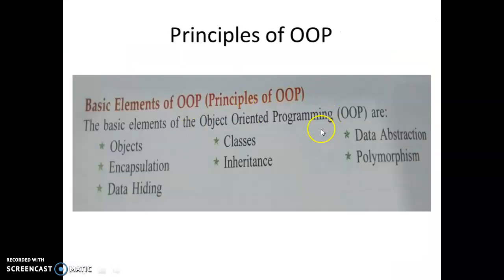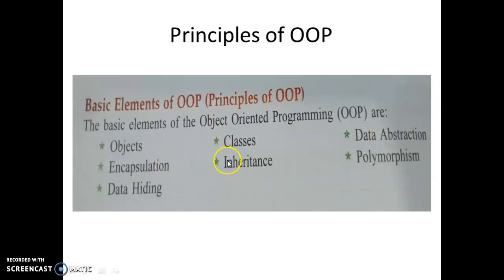Here are the principles or basic elements of Object Oriented Programming. There are some basic elements or features: Object, Classes, Data Abstraction, Encapsulation, Inheritance, Polymorphism, and Data Hiding. I already discussed Objects and Classes.